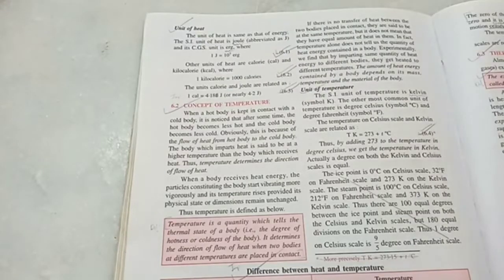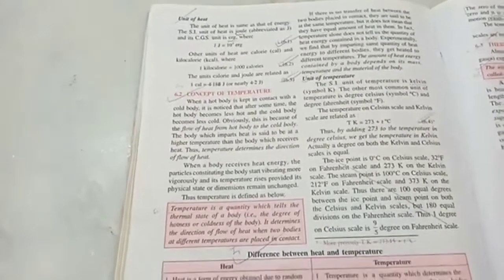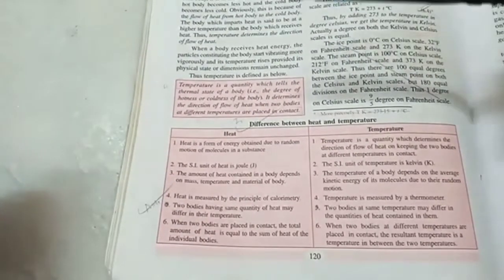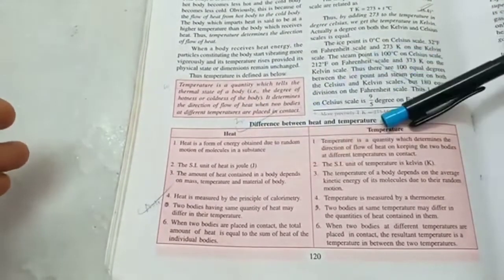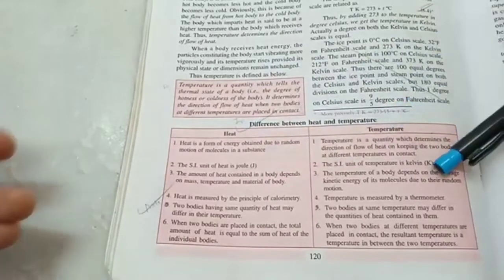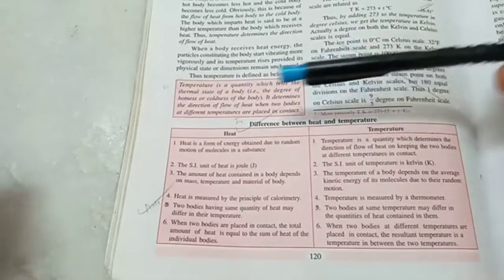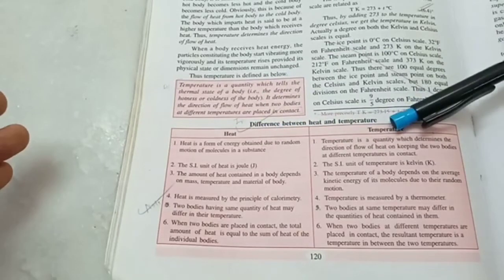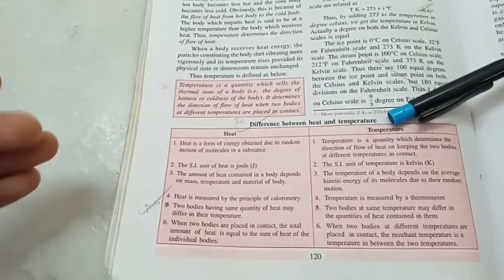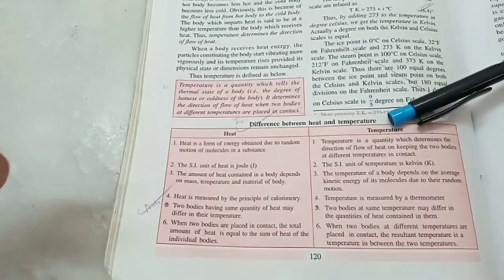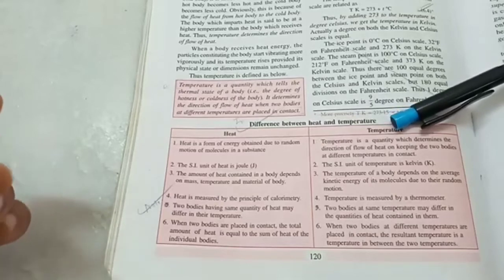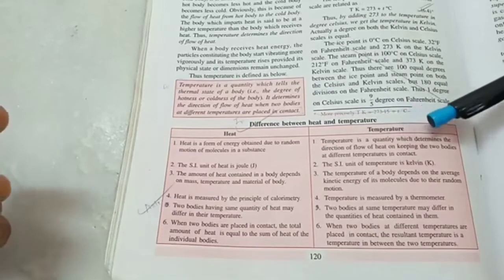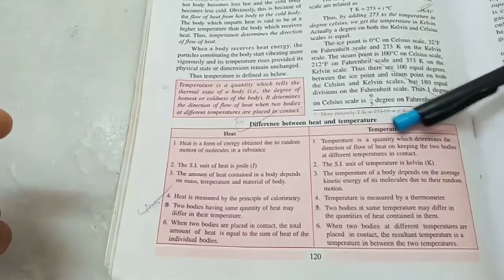The temperature of a body gives us an indication of heat, but they are quite different. Number one difference is, obviously, the units. Heat is measured in Joule, whereas temperature, the SI unit, is Kelvin. But the concepts are different, because heat is a form of energy, and temperature is simply the indication of the total kinetic energy of the molecules of a substance.